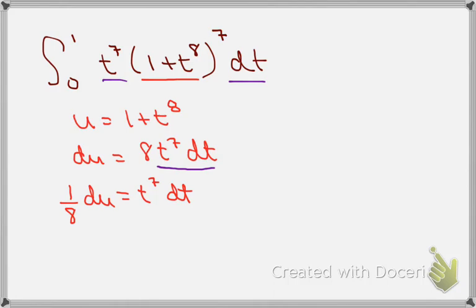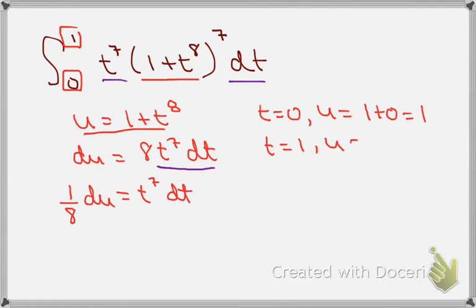But I have to remember that these limits are for t and I need limits for u. So I'm going to use this expression u equals 1 plus t to the eighth to find my limits for u. When t equals 0, u equals 1 plus 0, or 1. And when t equals the upper limit 1, u equals 1 plus 1 to the eighth, which is 2.